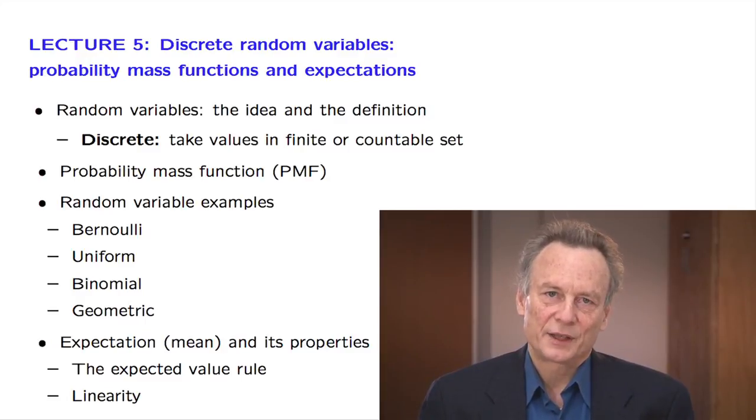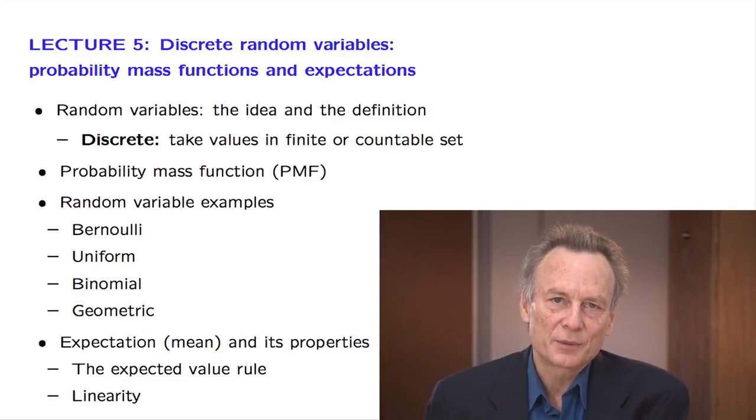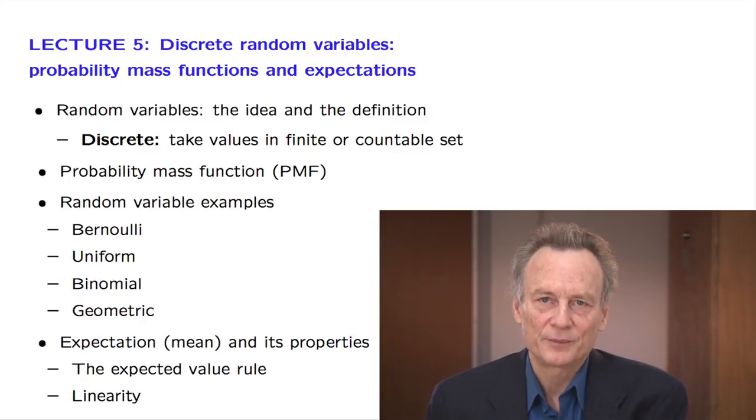To any discrete random variable, we will associate a probability mass function, which tells us the likelihood of each possible value of the random variable.